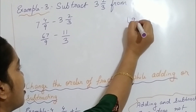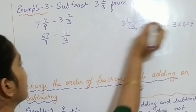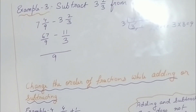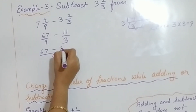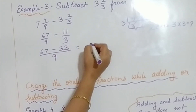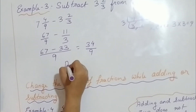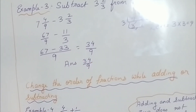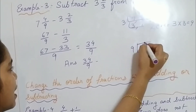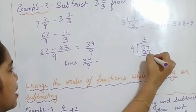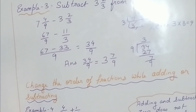We take the LCM of 9 and 3. LCM is 3 into 3, which is 9. So with LCM 9: 9 divided by 9 is 1, so 1 into 67 is 67; and 9 divided by 3 is 3, so 3 into 11 is 33. So 67 minus 33 is 34 by 9. This is an improper fraction, so we convert: 9 threes are 27, giving us 3 and 7 by 9. So the answer is 3 and 7 by 9.